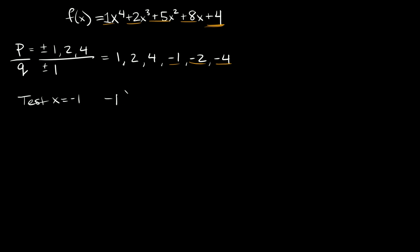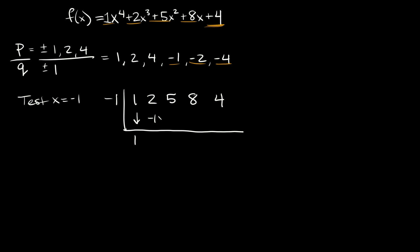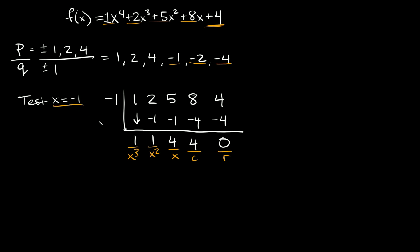So let's test x is equal to negative 1. We put negative 1 on the outside, and our coefficients are 1, 2, 5, 8, and 4. Bring the 1 down. Negative 1 times 1 is negative 1, giving us positive 1. Negative 1 times 1 is negative 1, giving us positive 4. Negative 1 times 4 is negative 4, giving us positive 4. Negative 1 times 4 is negative 4, giving us 0. The remainder is 0, so x is equal to negative 1 is also a solution.